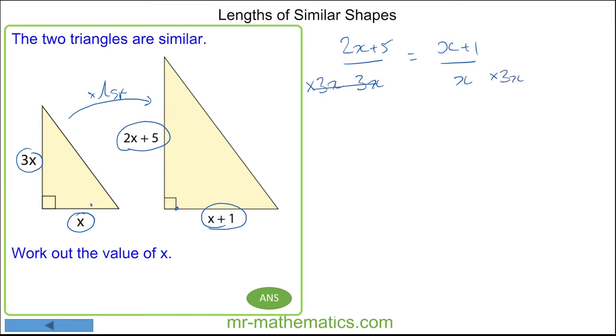Because these two will cancel and this x will cancel with this x. So we have 2x plus 5 is equal to 3 times x plus 1.